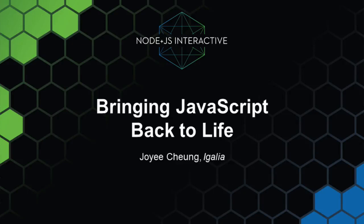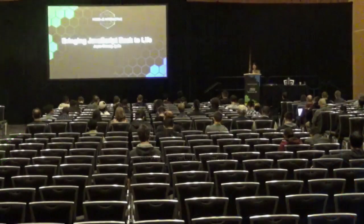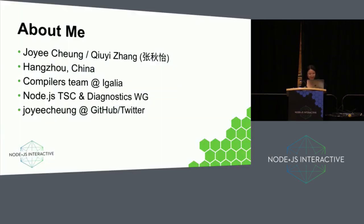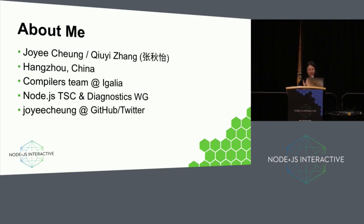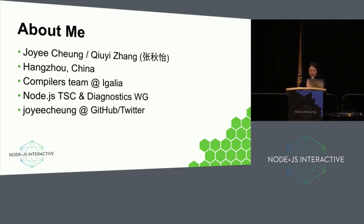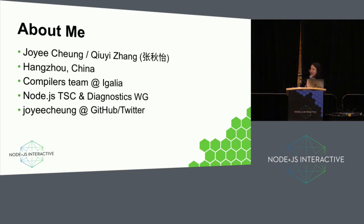Allow me to introduce myself. I am Zhou Yi. I live in Hangzhou. I currently work on the compiler scene at Igaria. I am a member of the Node.js Techno steering committee and the Diagnostics Working Group. You can find me on GitHub or Twitter with handle Zhou Yi-Chan.